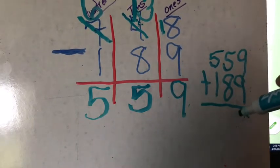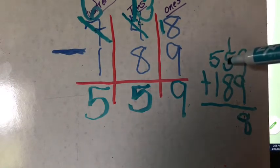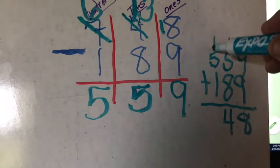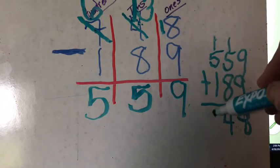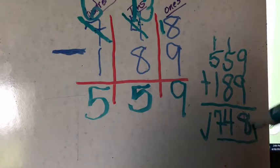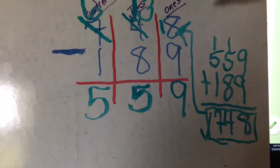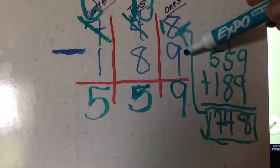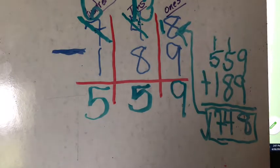9 plus 9 is 18, carry my 1. 8 plus 5 is 13 plus 1 is 14, carry my 1. 5 plus 1 is 6 plus 1 is 7. So this checks because this was the original number we started with, the 748 that she started with, all sharpened. She broke 189 or somehow they broke and our final answer is 559.